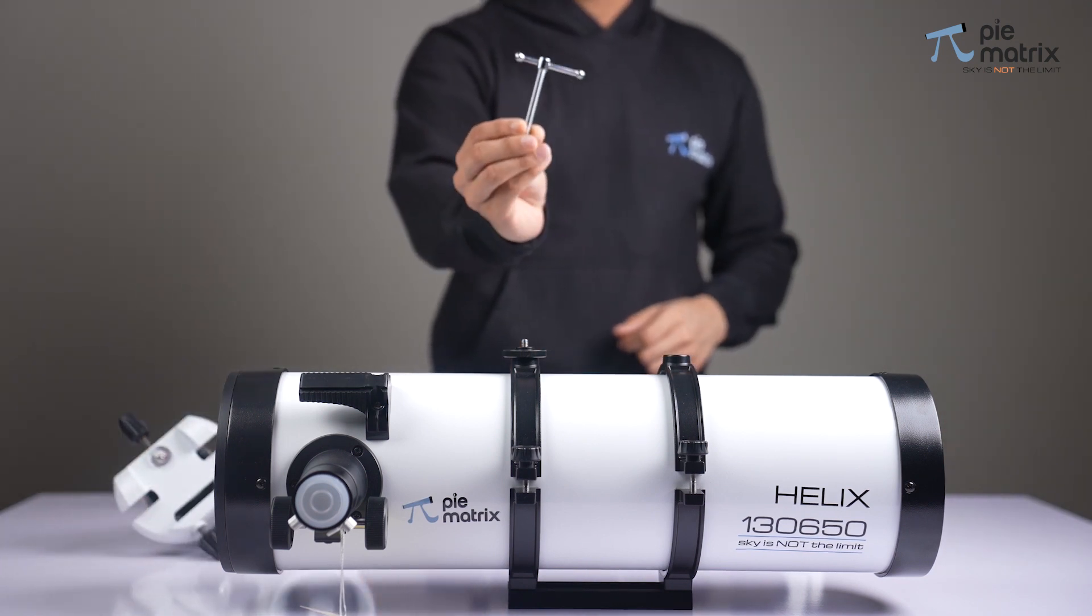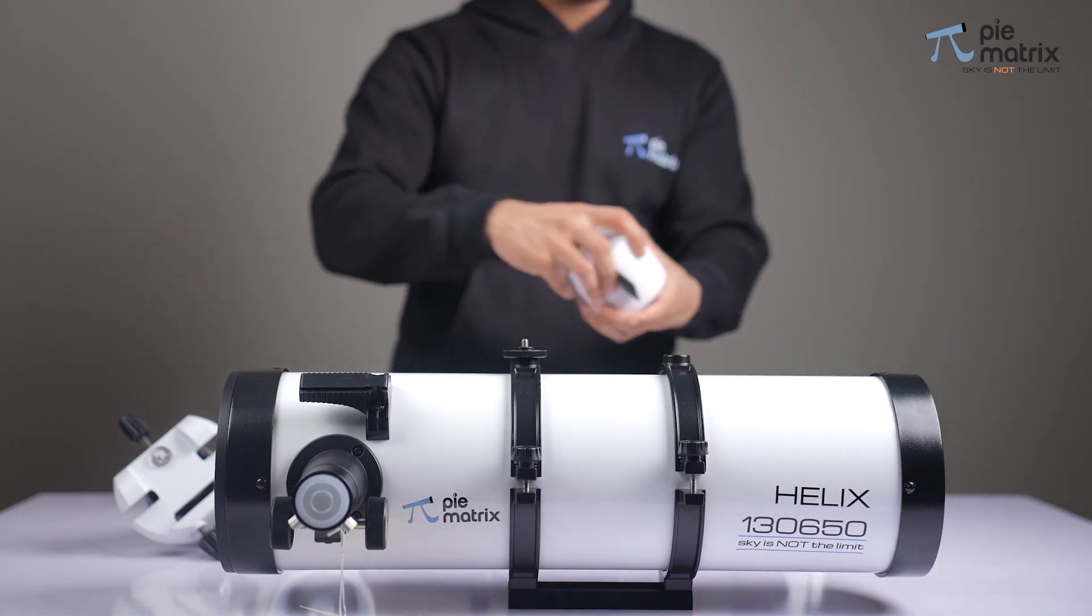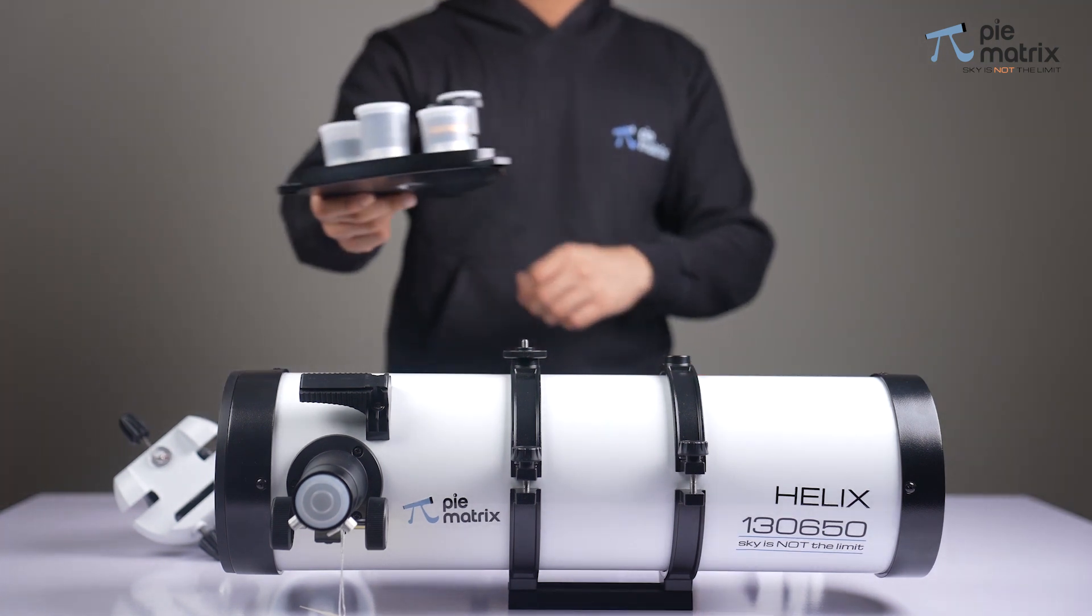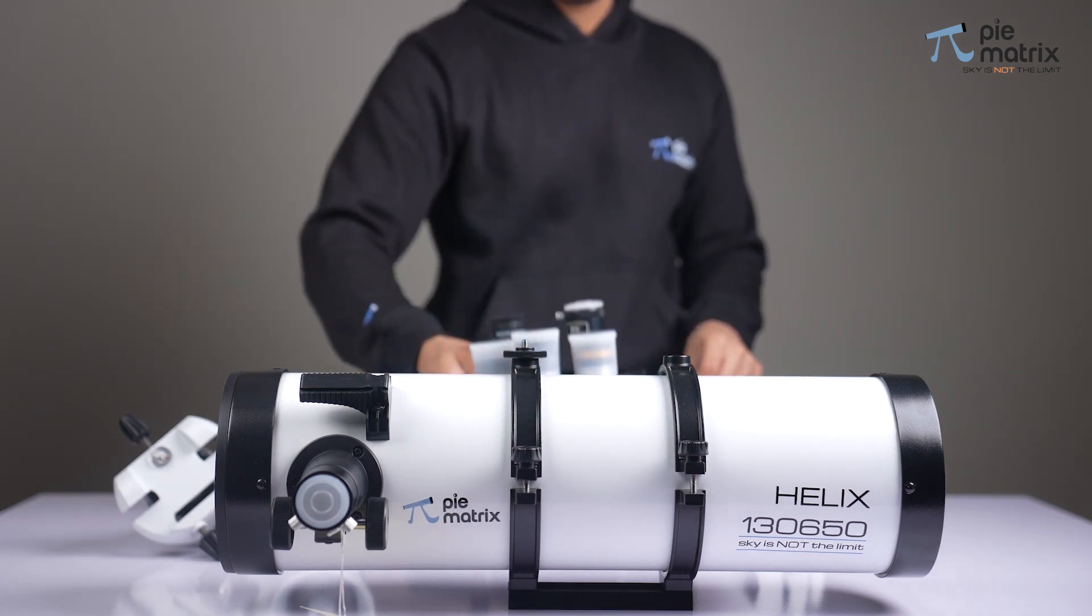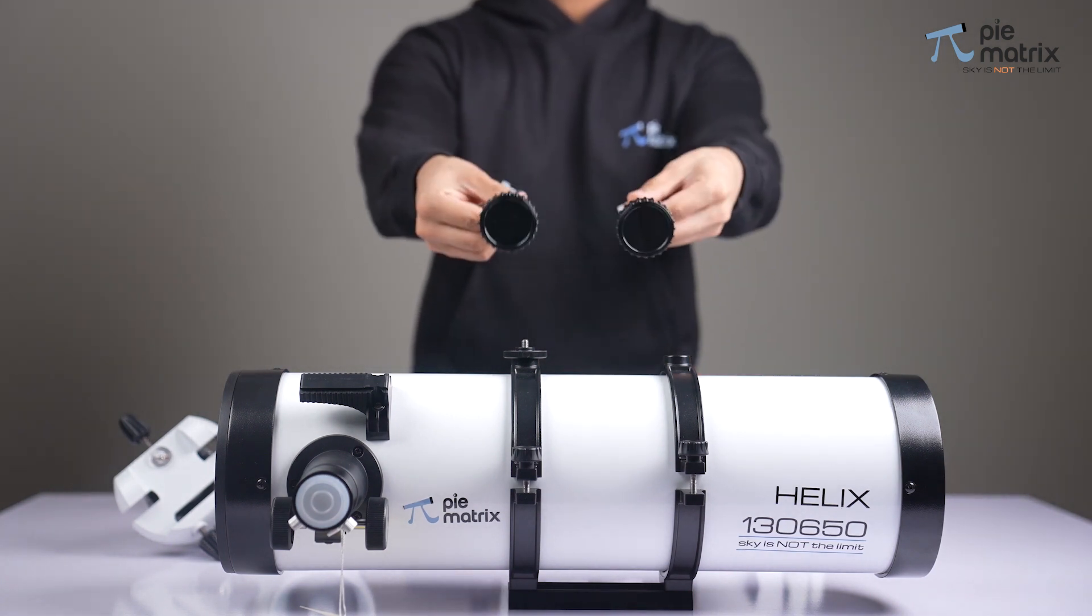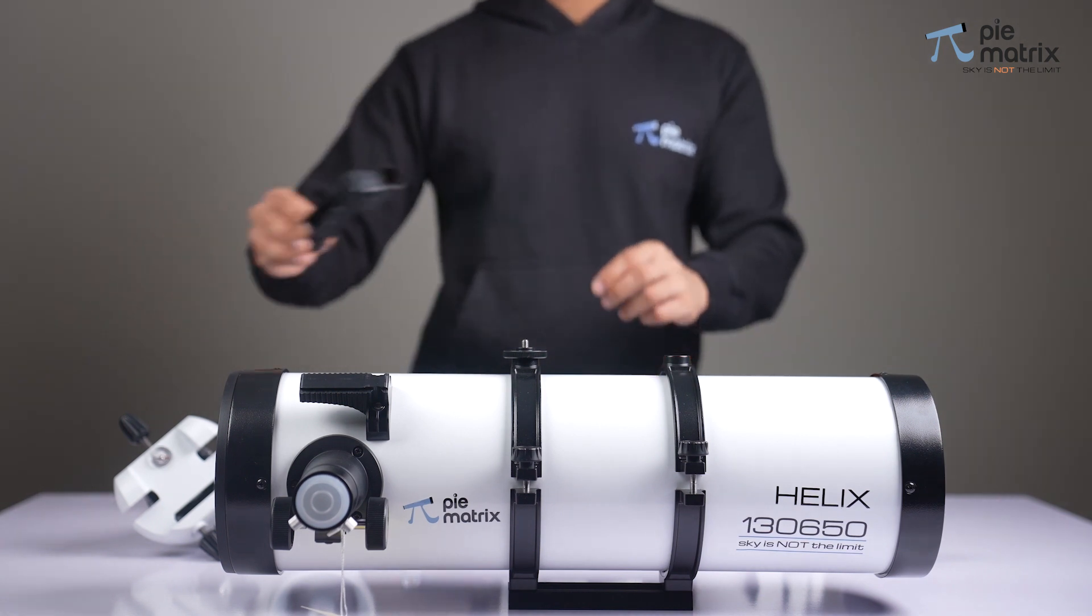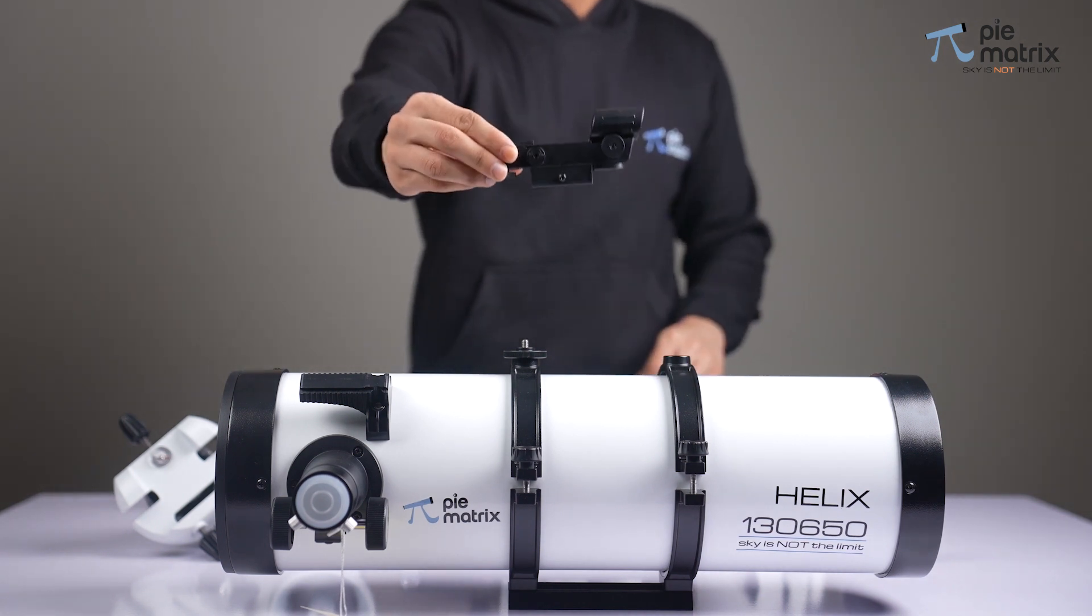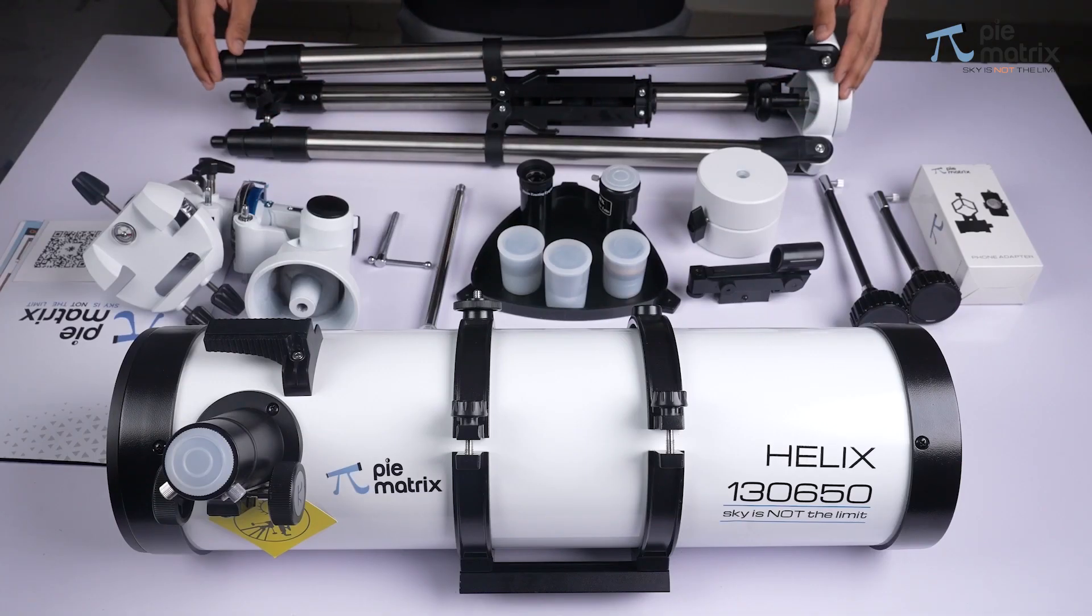altitude-adjusting T-bolt, a set of counterweights, set of eyepieces and Barlow lenses placed upon the accessory tray, two slow motion knobs for each respective axis, counterweight rod, and the red dot finder scope. These are all the items you get inside this box.